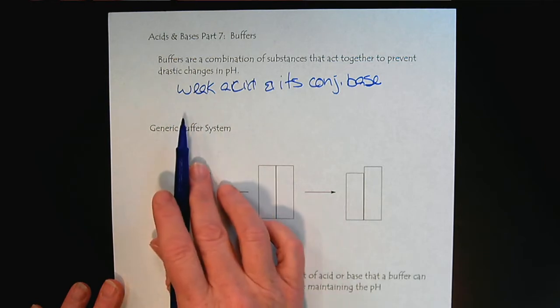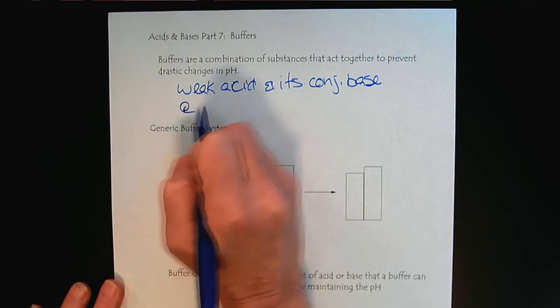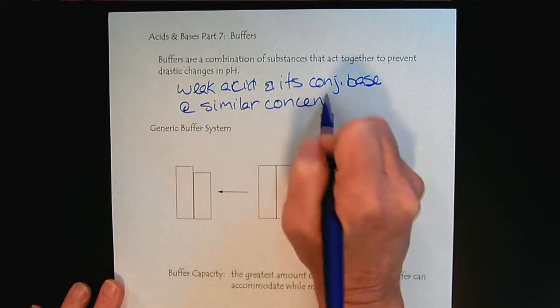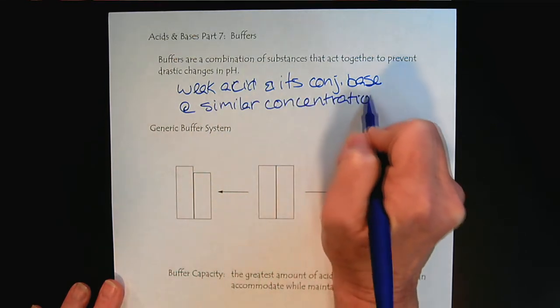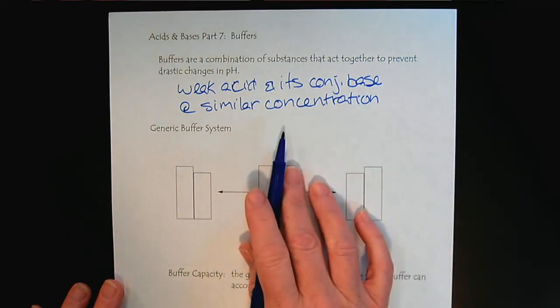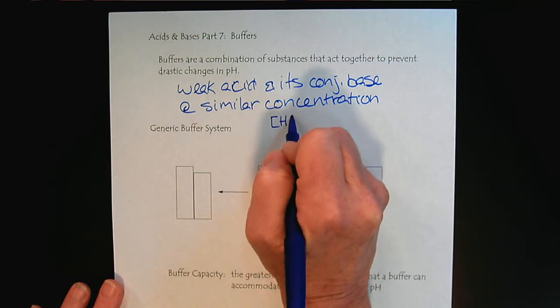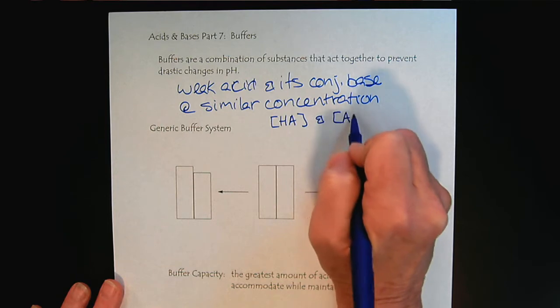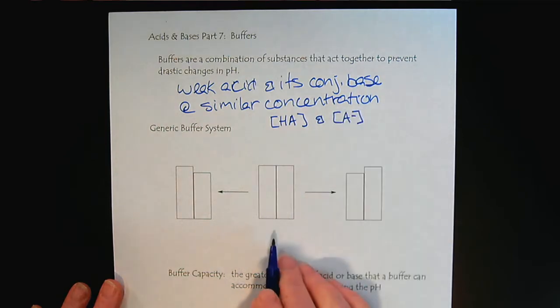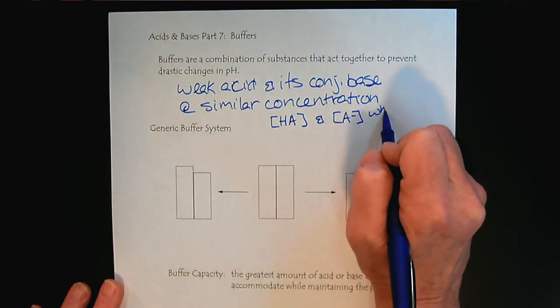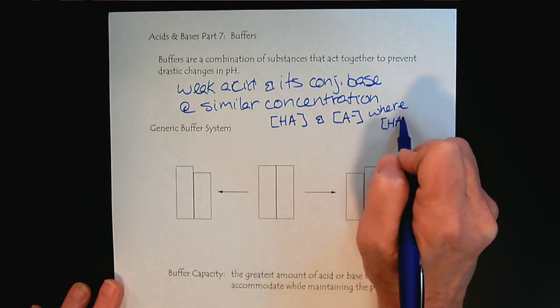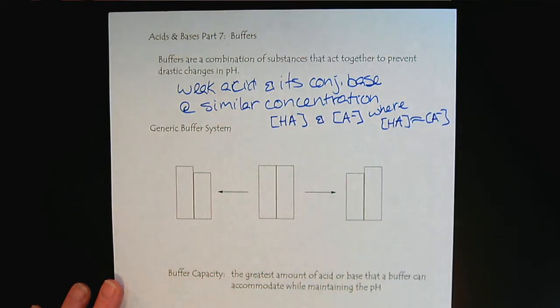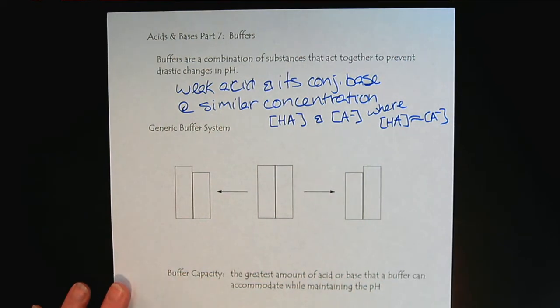The other important part about buffers is typically they are going to be at similar concentrations. So we would have a weak acid and we would add in some of its conjugate base and these concentrations would be similar. The concentration of HA would be approximately equal to the concentration of A-. This would be our ideal buffer system.